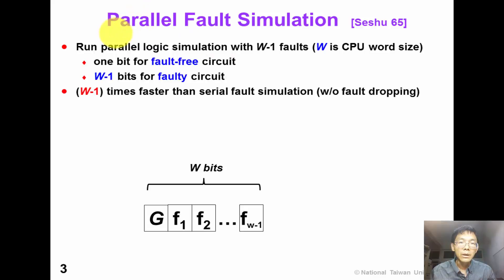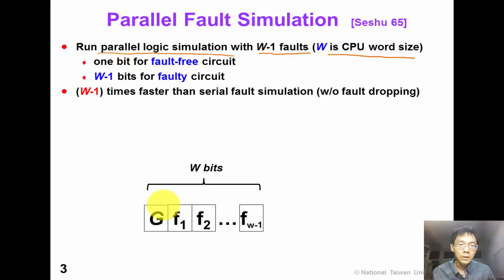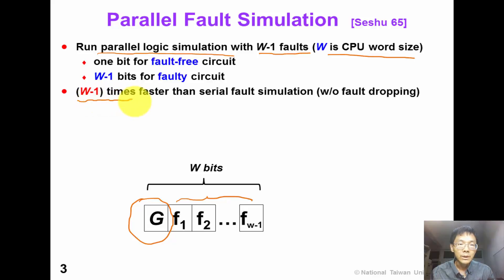First, parallel fault simulation runs parallel logic simulation with W-1 faults in a word, where W is the CPU word size. The first bit is reserved for fault-free, or good circuit simulation. The other W-1 bits are for faulty circuits. So we can speed up W-1 times compared with traditional serial fault simulation.